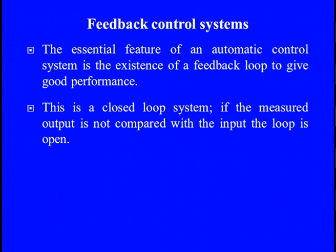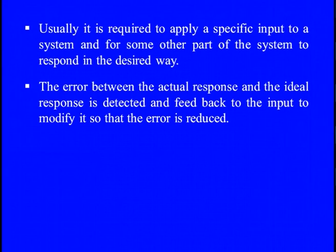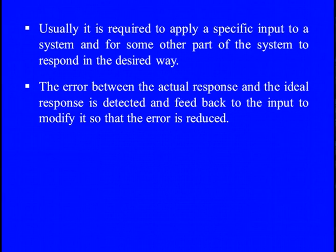If the measured output is not compared with the input system, the loop is open. If we are not looking for accuracy and just want the action to happen regardless of outcome, that is an open system — no error and actuation in the second iteration. It is usually required to apply a specific input to a system and for some part of the system to respond in the desired way, so the system should respond with the proper desired value as the outcome.